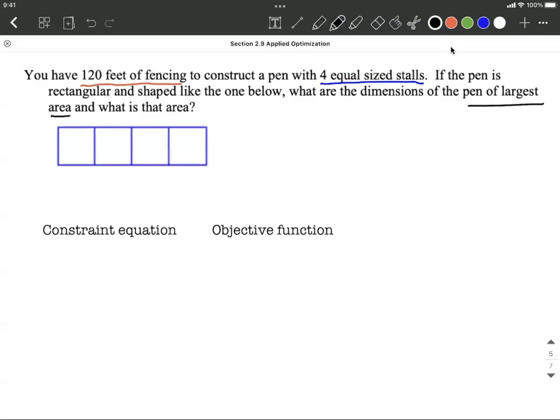So the constraint equation has to do with, we only have 120 feet of fencing. That's our limitation. So 120 is going to be involved with this. And our objective function, well, we want to find the largest area. And it is a rectangle, so we can think like length times width.